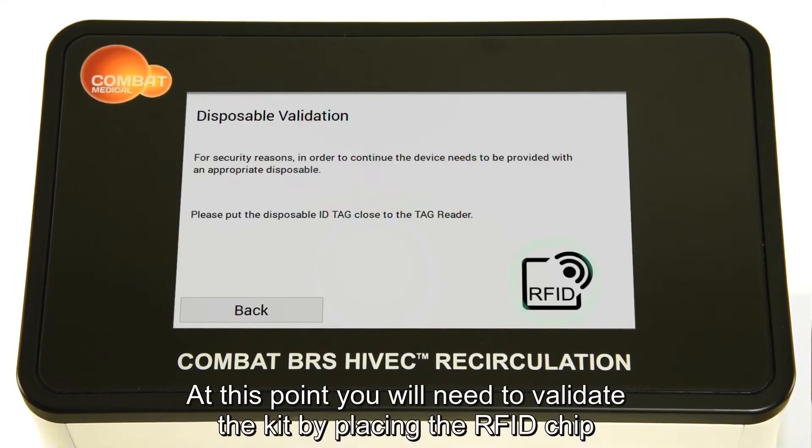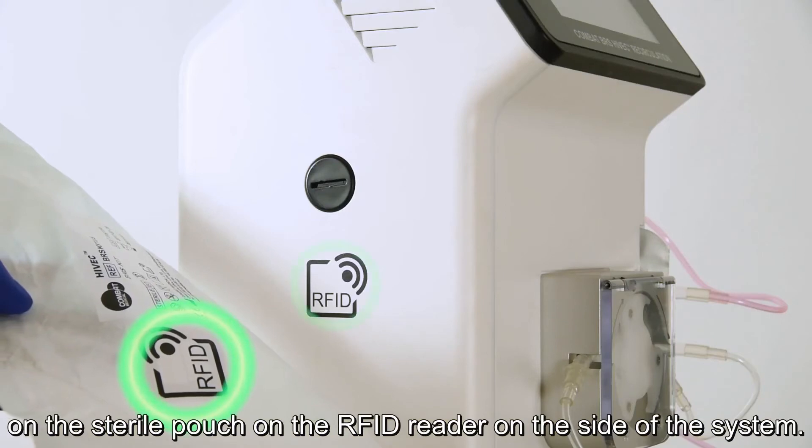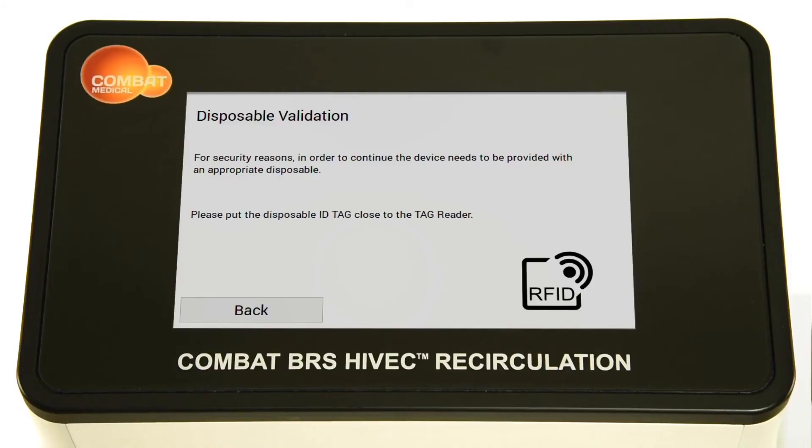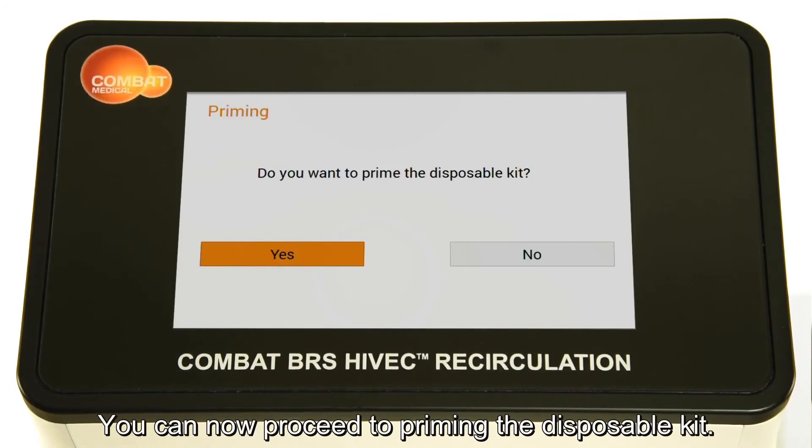At this point, you will need to validate the kit by placing the RFID chip on the sterile pouch on the RFID reader on the side of the system. You can now proceed to priming the disposable kit.